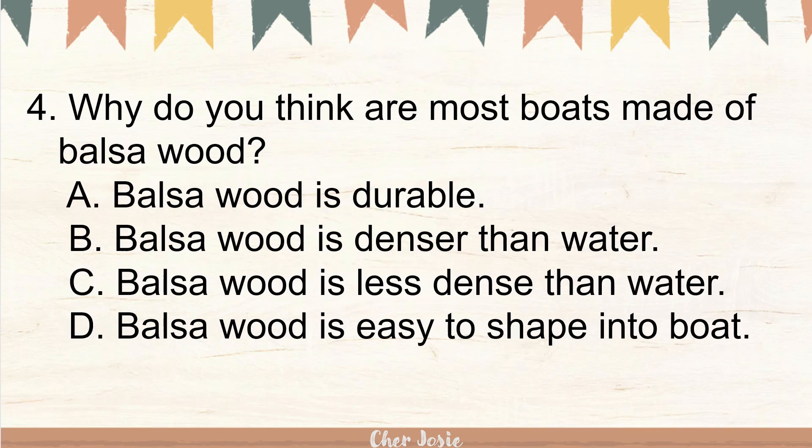Number four: why do you think most boats are made of balsa wood? A. Balsa wood is durable. B. Balsa wood is denser than water. C. Balsa wood is less dense than water. Letter D. Balsa wood is easy to shape into boats. The correct answer is letter C. Balsa wood is less dense than water.